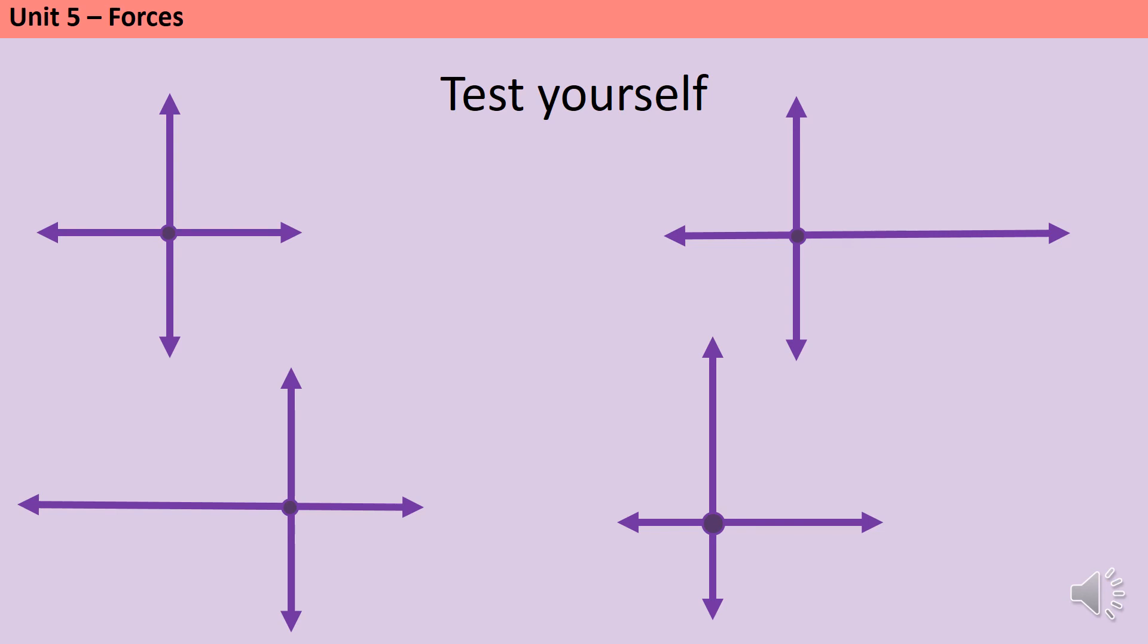The first object in the top left of the screen has got four balanced forces acting on it. There's no overall resultant force and therefore it's going to carry on moving exactly the same as it did before. It will carry on moving at five metres a second to the right.